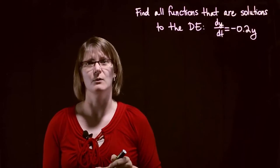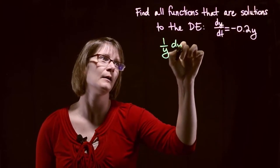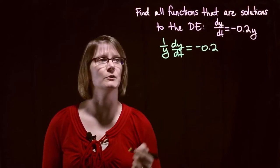So we need to undo this multiplication with a division. So I'm going to rewrite this as 1 over y dy dt equals negative 0.2.